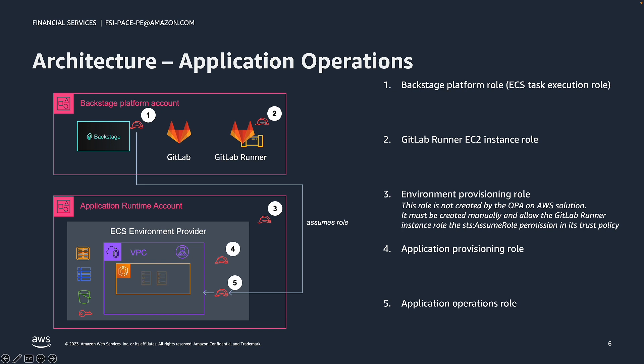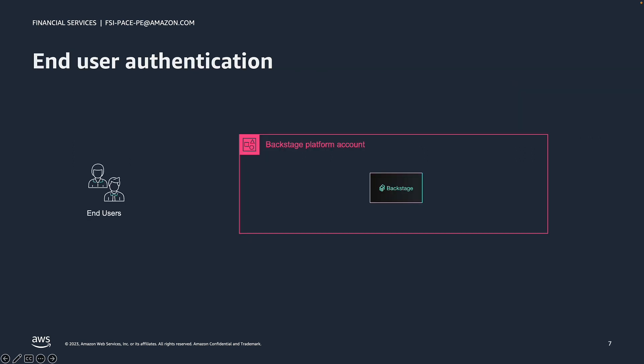For example, in an ECS environment provider, a developer may start and stop the application or scale the service. With an understanding of how Backstage and IAM roles are used to run Backstage, manage environment provisioning, application provisioning, and application operations, let's turn to look at how users interact with the Backstage and OPA on AWS solution.